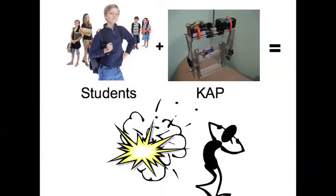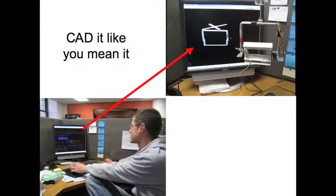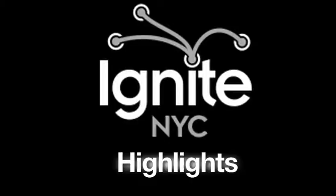Unfortunately, Will lent his KAP rig to students from the student chapter at Columbia and they broke it. He didn't really know what was wrong with it — wasn't sure if it was hardware or the transmitter — so he gave it to my co-worker Larry and me. Instead of refurbishing it, we decided to completely redesign it. We started out in a program called Inventor, made a whole new 3D model, and made it adjustable to fit different kinds of cameras.